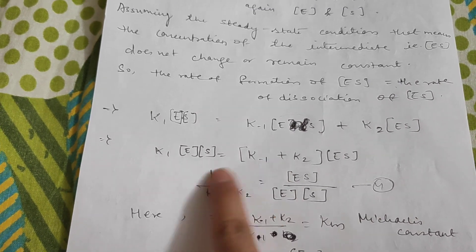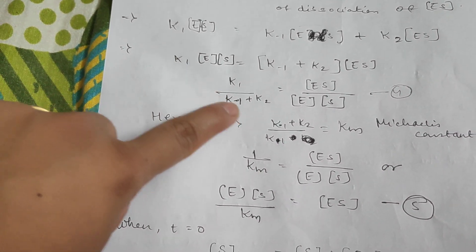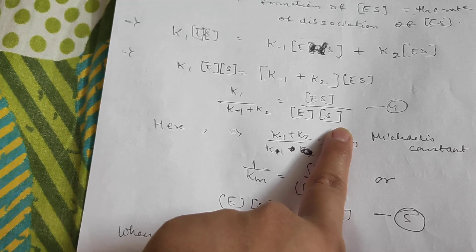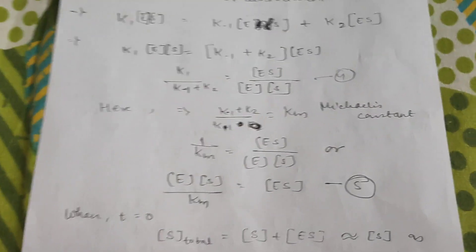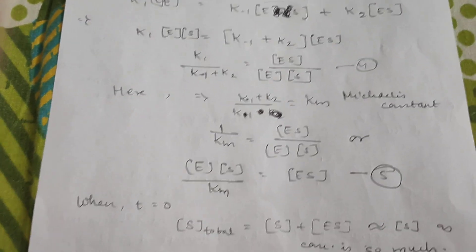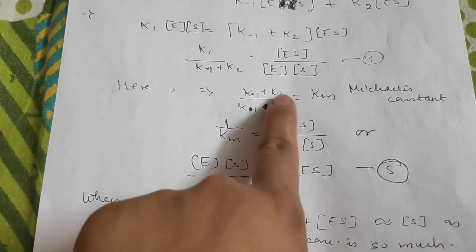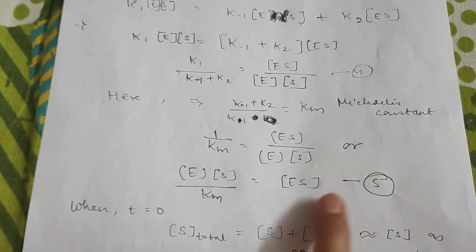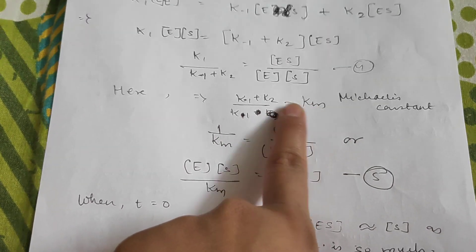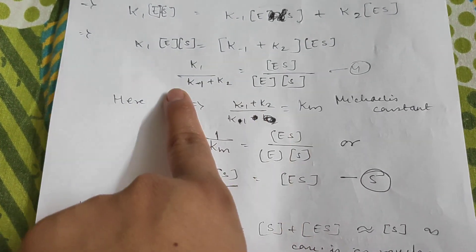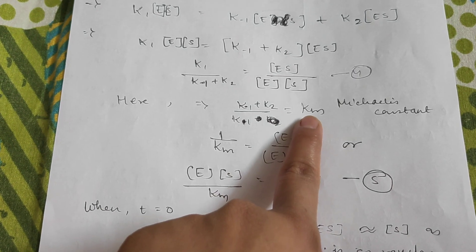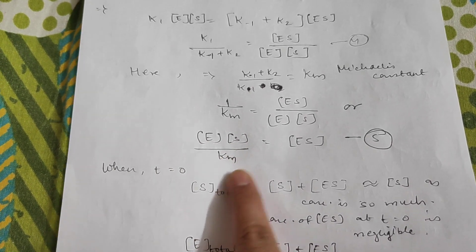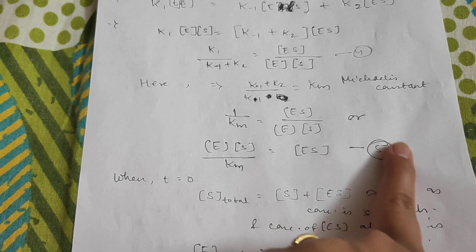Simplifying this equation: K1 / (K-1 + K2) = [ES] / ([E]·[S]). This is just a straightforward mathematical derivation. Now, the ratio (K-1 + K2) / K1 is defined as Km, the Michaelis constant. Substituting this definition and rearranging gives us [ES] = [E]·[S] / Km. We can label this as Equation 5.